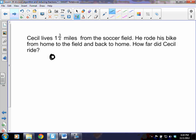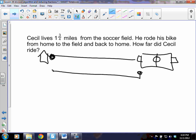So he started here. I can even make a nice, beautiful house. And he rode to the soccer field. Here's our soccer field. Not to scale. And then he rode from the field back home again. Now it tells us that this distance is 1 and 3/4, which means this distance must be 1 and 3/4.